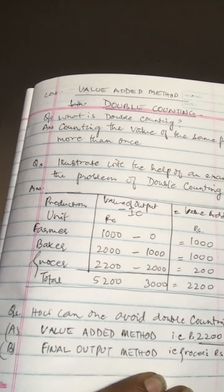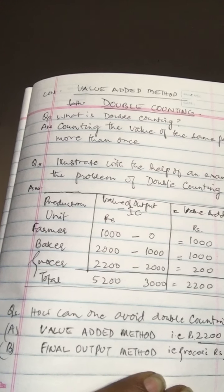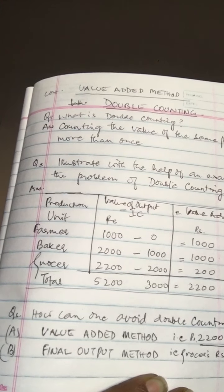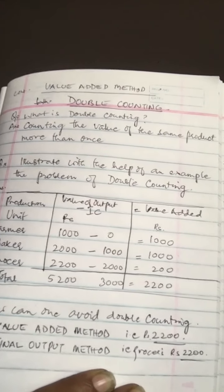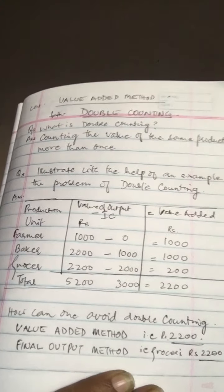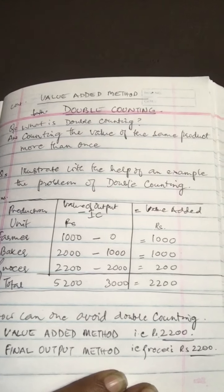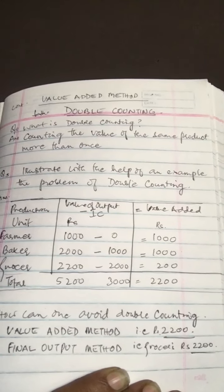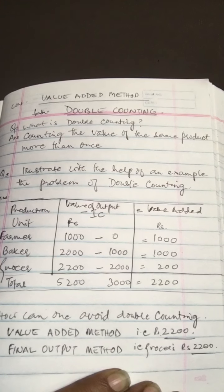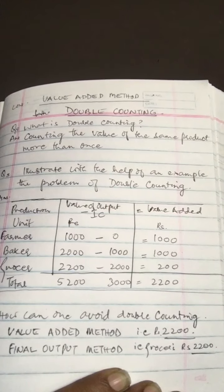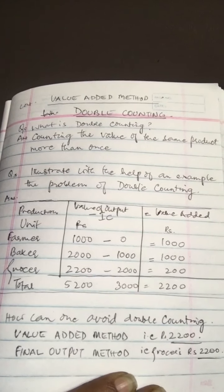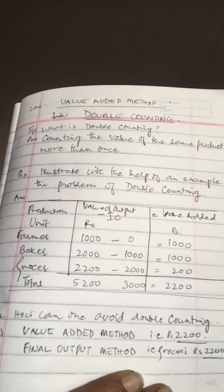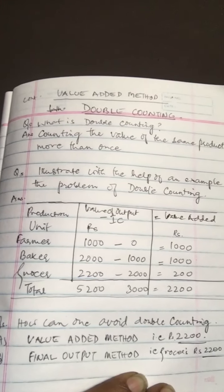So how do you avoid double counting? There are two ways. First, we can take the value added — ₹1000 plus ₹1000 plus ₹200 equals ₹2200 — so you either use the value added method. Or second, from the value of output column, you take the value of the final product only, which is the grocer's sale of ₹2200. These are the two methods: the value added method and the final product method.